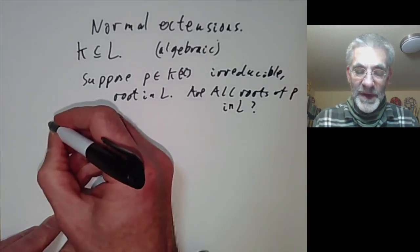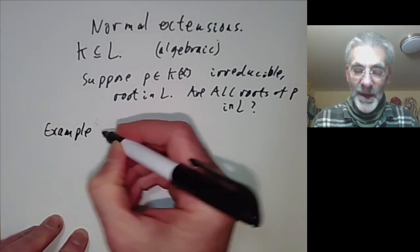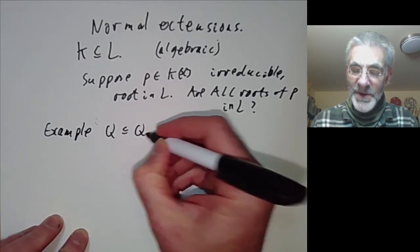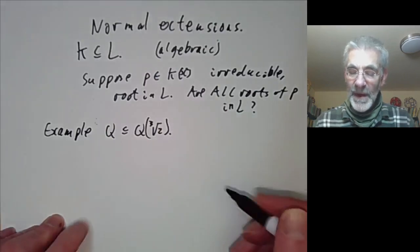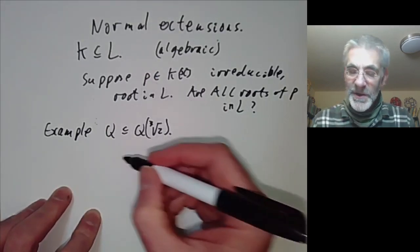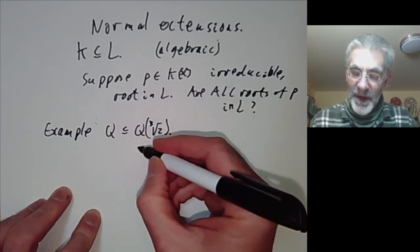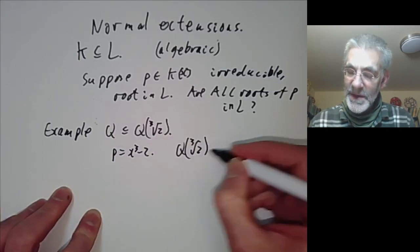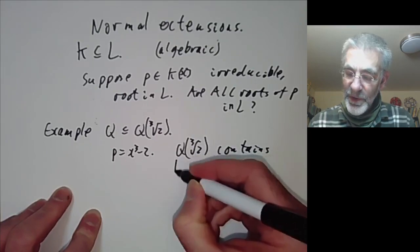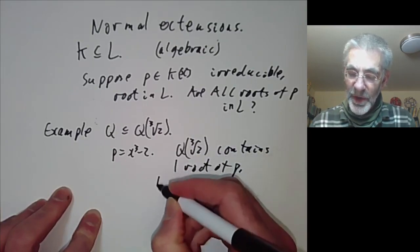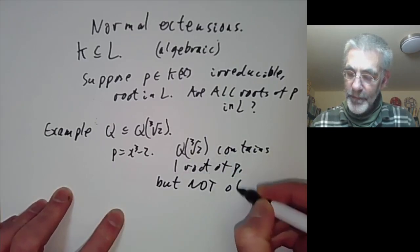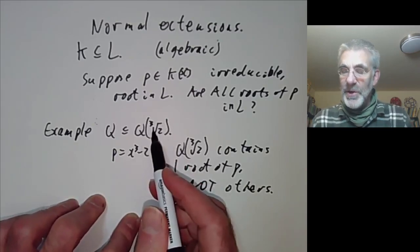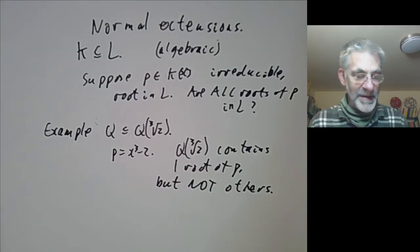Let's start by looking at a couple of examples. We will use the example of the rationals contained in the rationals with the cube root of 2 adjoined. This extension does not have the property above. If we take p to be x cubed minus 2, the cube root of 2 contains one root of p but not the others, because the others are the cube root of 2 times a complex cube root of unity, which certainly doesn't lie inside this field.